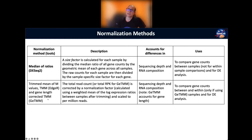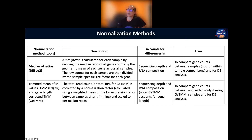The trimmed mean of M values, or TMM, is used by edgeR. A variation called geTMM also adds gene length correction. TMM corrects total read count or RPK by a normalization factor calculated using a weighted mean of log expression ratios between samples after trimming. Because it uses that weighted mean, it accounts for RNA composition. TMM accounts for sequencing depth and RNA composition, making it fine for differential expression analysis. Adding gene length correction with geTMM also accounts for gene length, allowing within-sample gene comparisons as well.